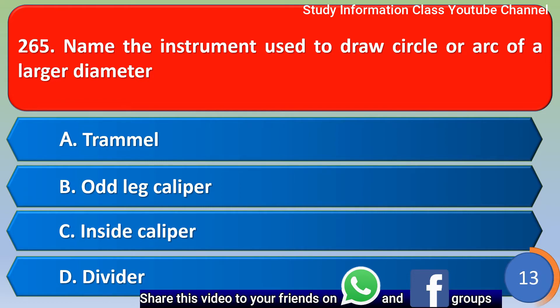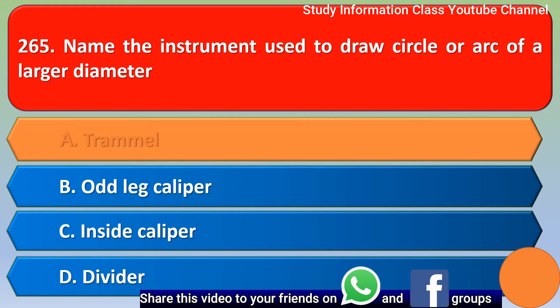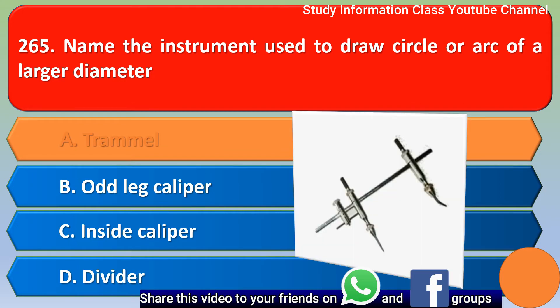Next question: name the instrument used to draw a circle or arc of a large diameter. Option A: trammel, Option B: outside caliper, Option C: inside caliper, Option D: divider. The right answer is Option A, trammel.